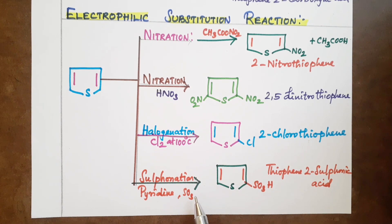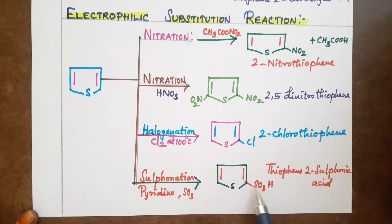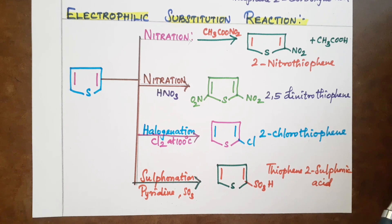Sulfonation: If you have SO3H in presence of pyridine, sulfonation occurs in presence of pyridine to give the SO3H group. This produces thiophene-2-sulfonic acid.